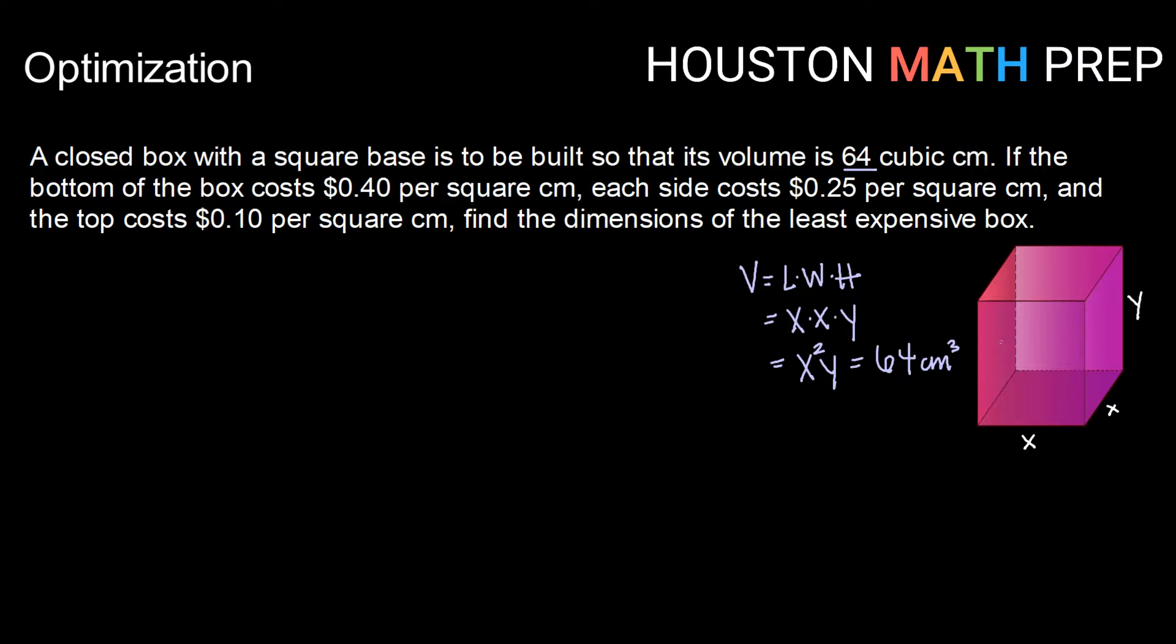So for this particular box, x times x times y, or x squared y, needs to be equal to 64 cubic centimeters. Alright, there we've got our constraint. Next we want to look at what is it that we are trying to optimize. Well here we are trying to find the least expensive box. That means there is some cost function which we'll create and we want to find its minimum.